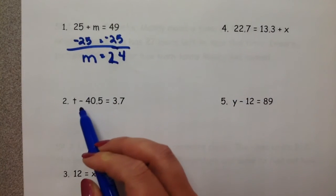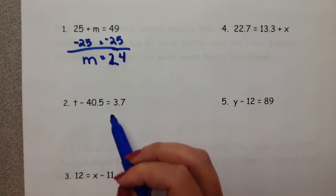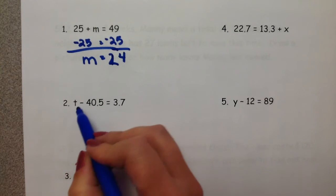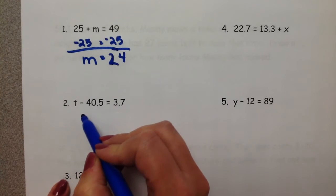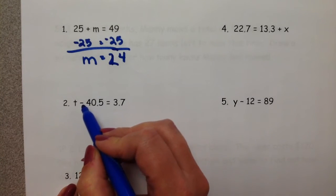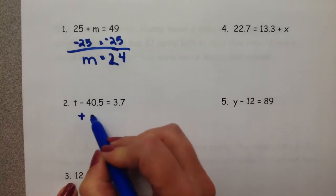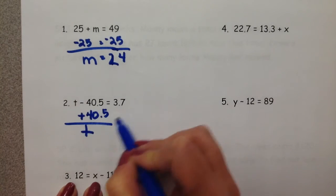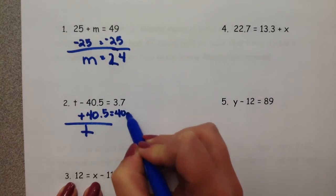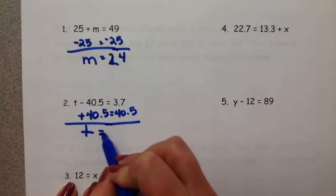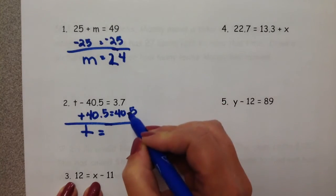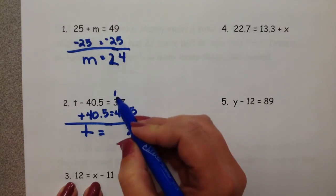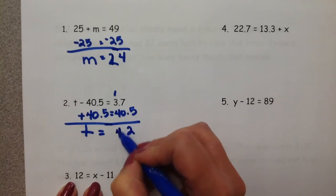Number two is t minus 40.5 is equal to 3.7. We want to get the variable by itself. So we do the inverse operation. The inverse operation for subtraction would be addition. So we're going to add 40.5. But if we do it to one side, we need to do it to the other side. 7 tenths and 5 tenths would give us 12 tenths. 1 and 3 would give us 4 and 4.